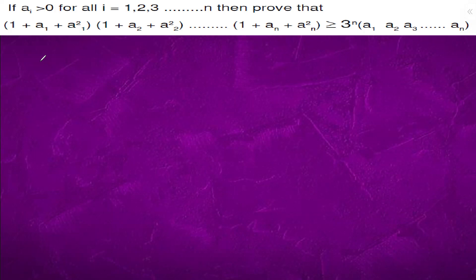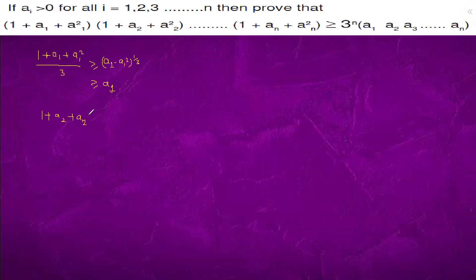We know that 1 plus a1 plus a1 whole square by 3 is greater than or equal to a1 into a1 square, which is equal to a2. Similarly, we will have 1 plus a1 whole square upon 3 is greater than or equal to a.